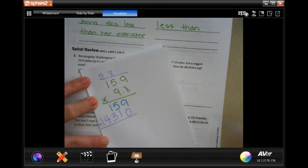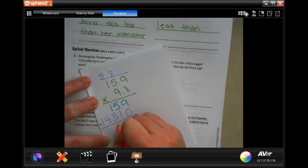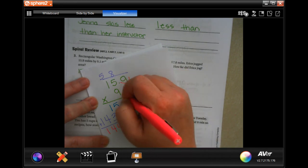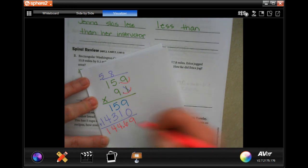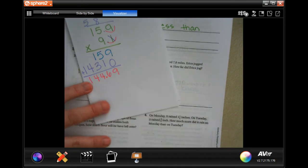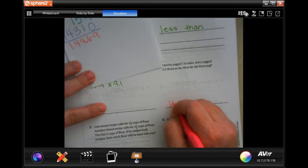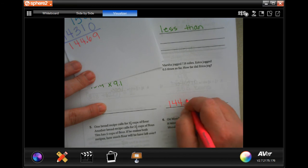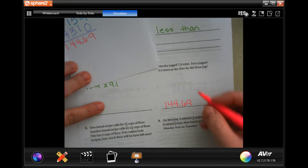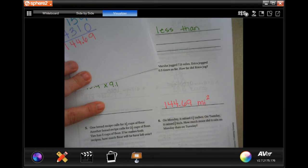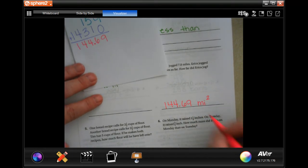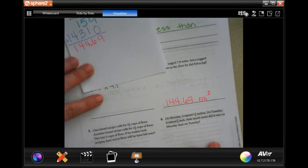Add them up. 9, 6, 4, 4, 1. And we need to go in one, two places for our decimal. So, 144 miles. Right? 144.69 miles squared or square miles. You can write square miles if you want. You can just put miles squared.